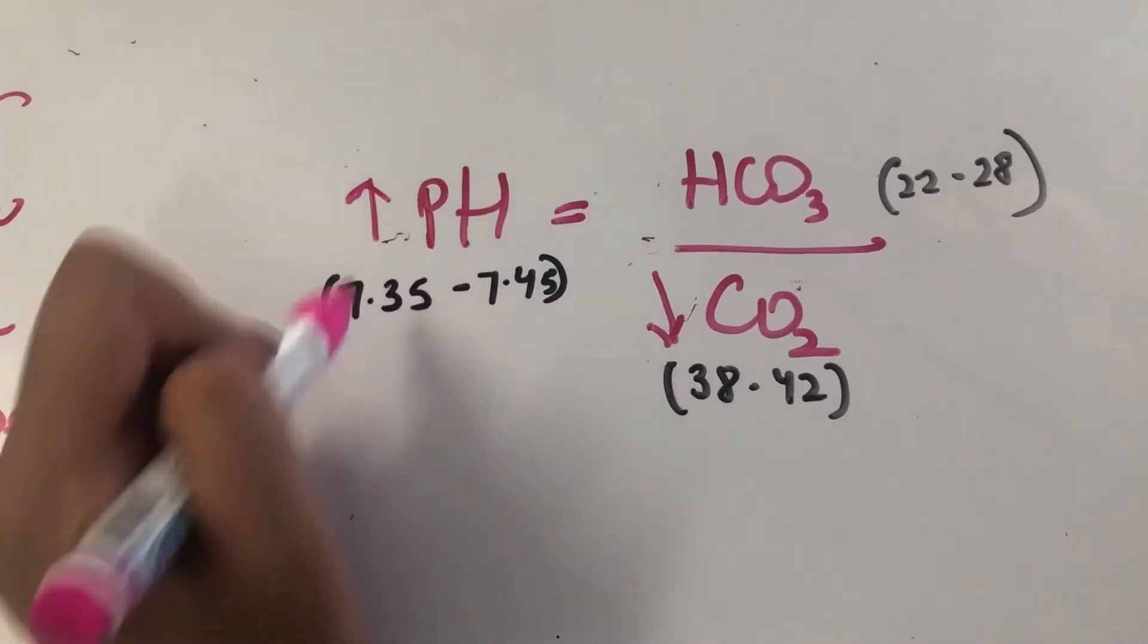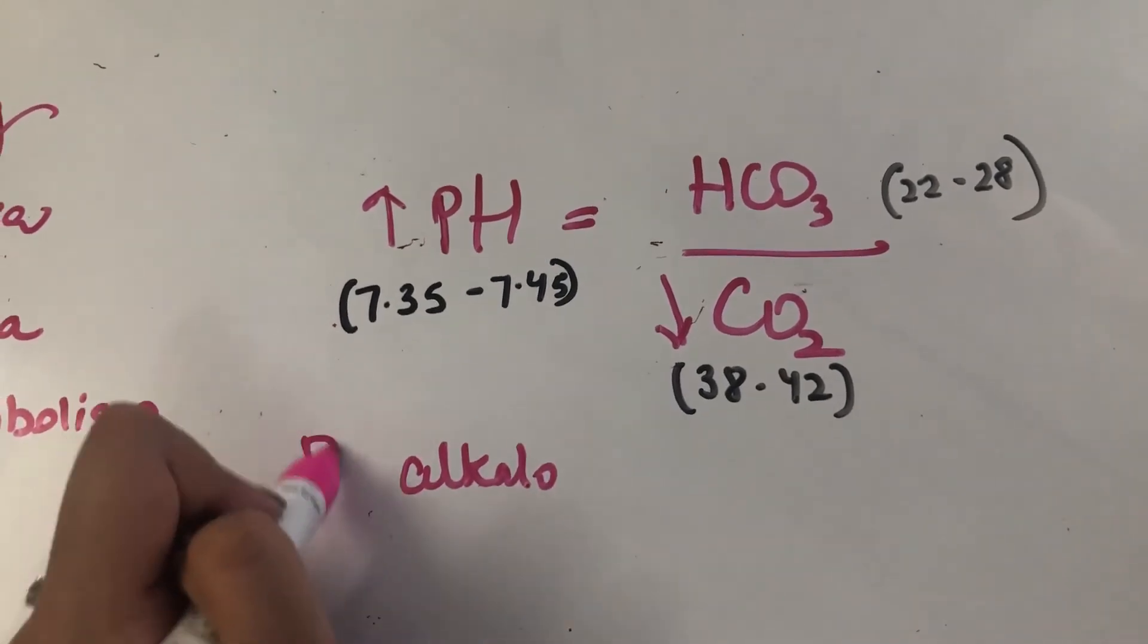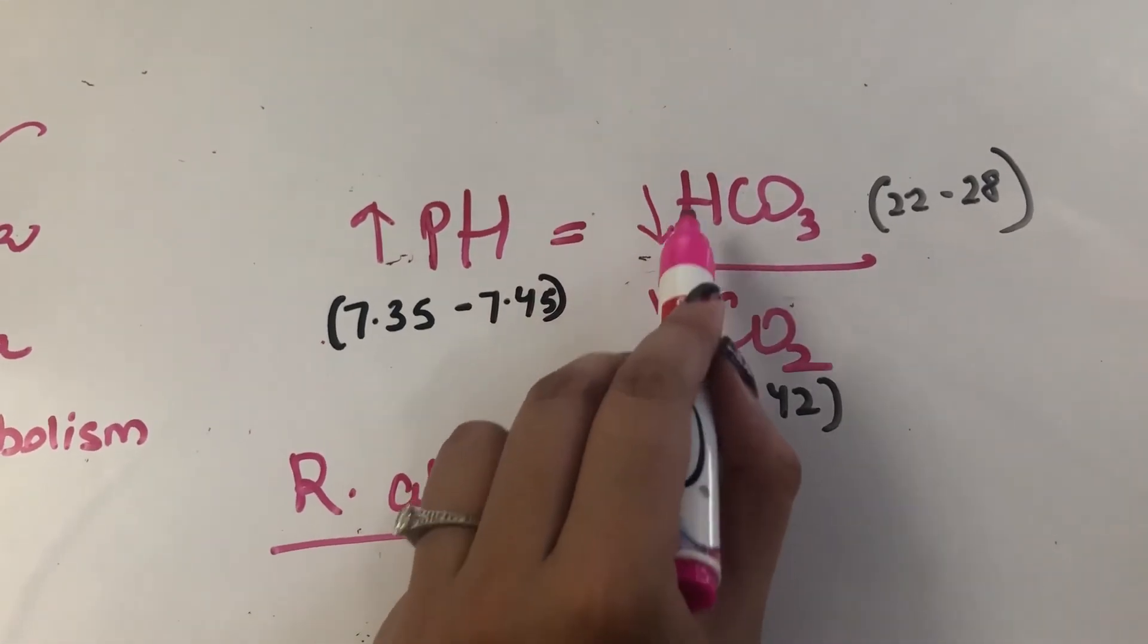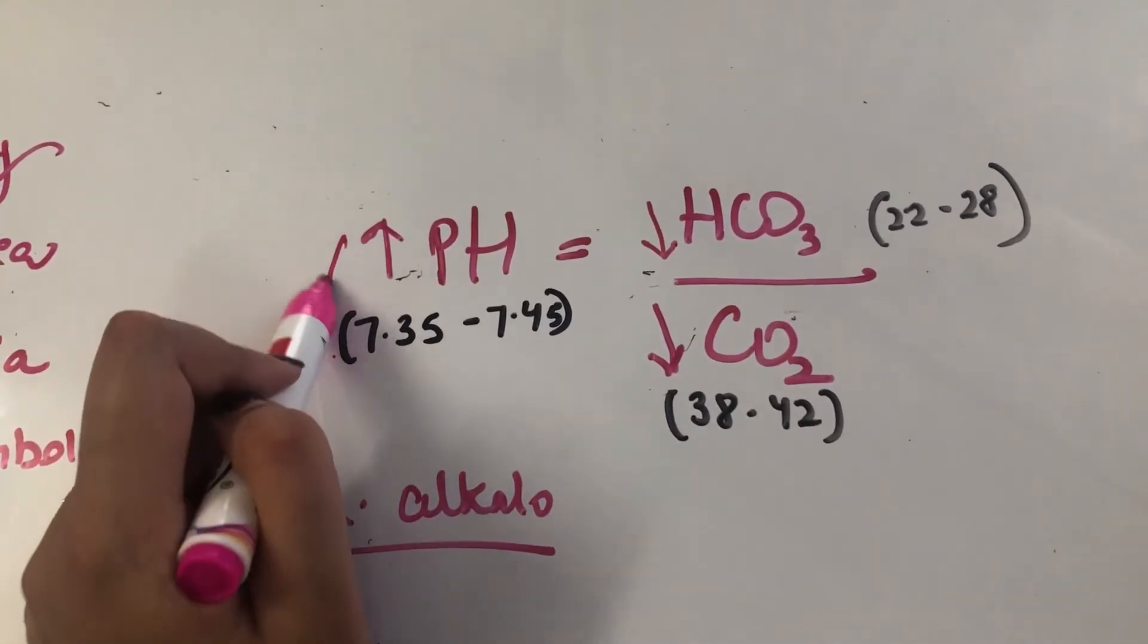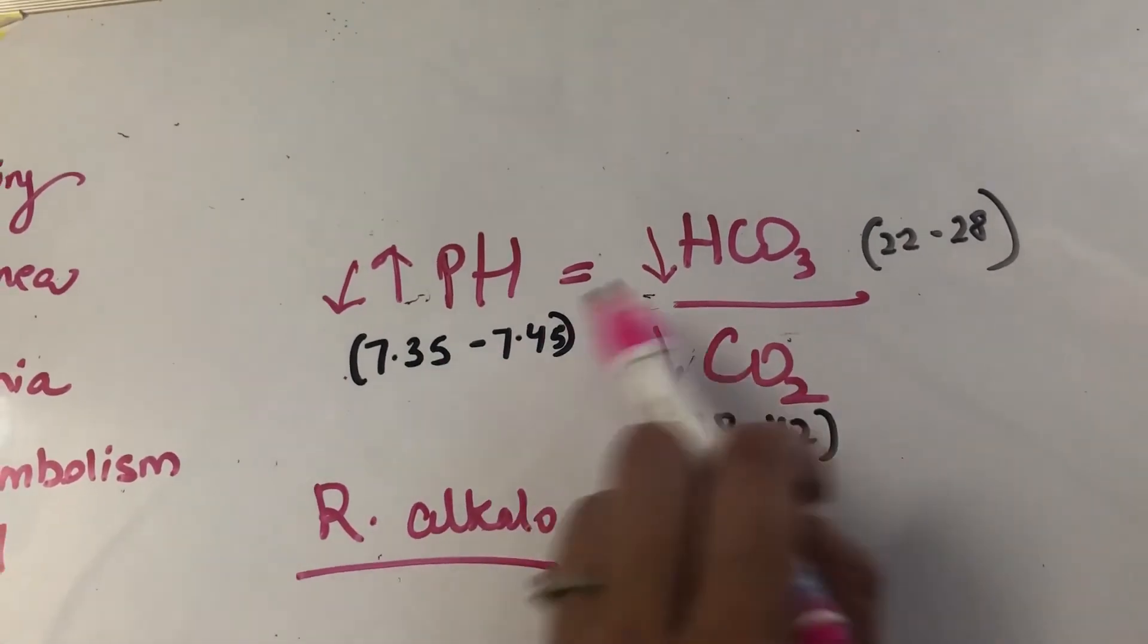So this will cause alkalosis, right? Again, respiratory alkalosis. And your HCO3 can then compensate by decreasing. So it can bring the pH back down. So your kidney will stop reabsorbing HCO3 and try to bring it down.